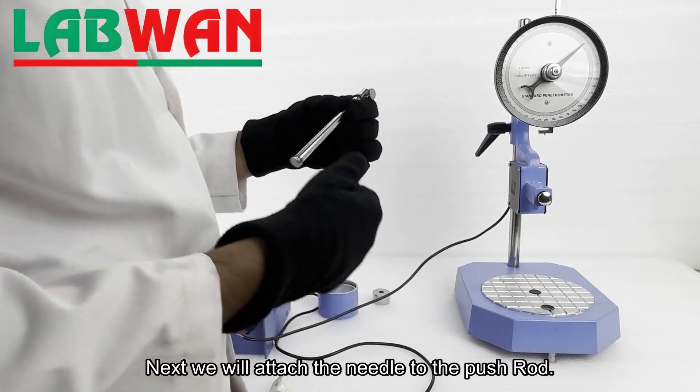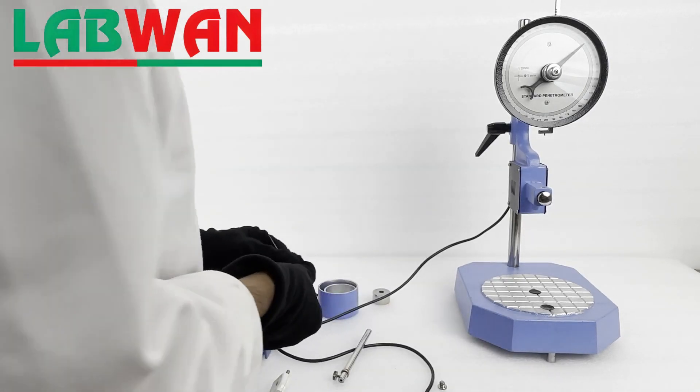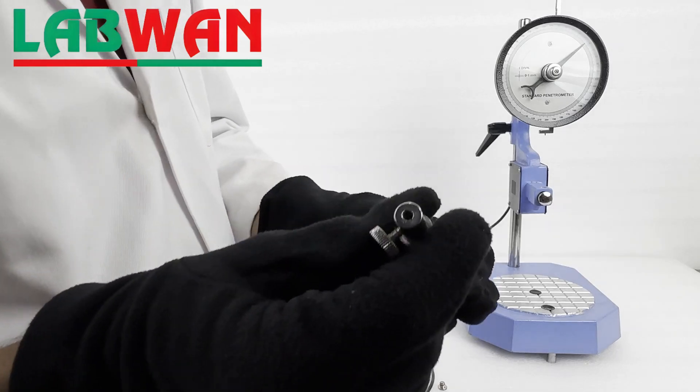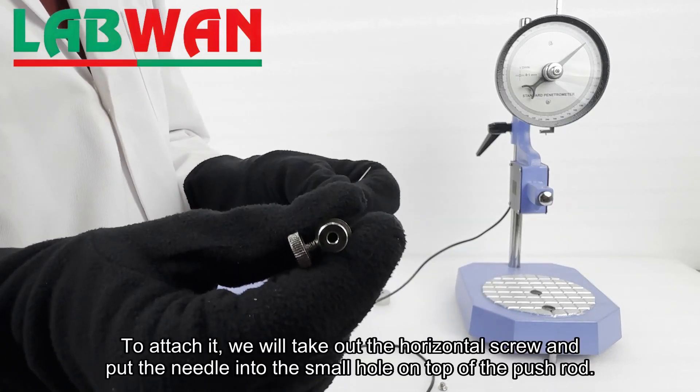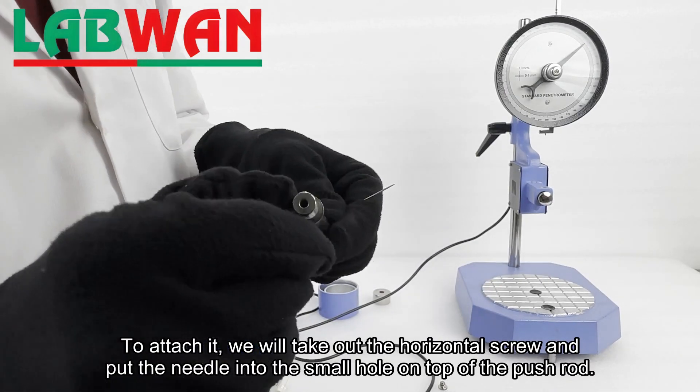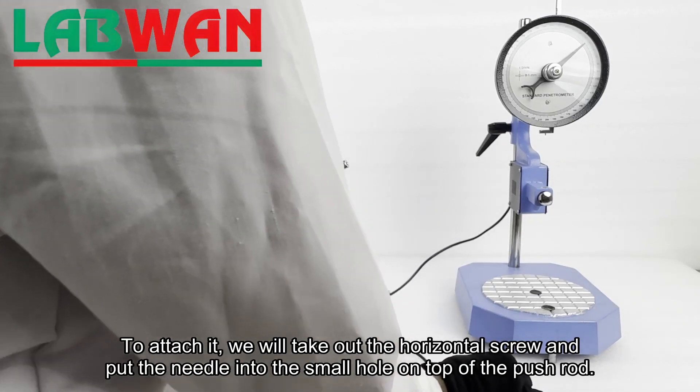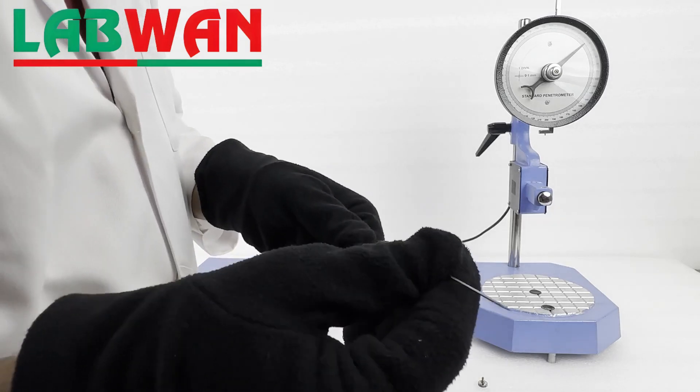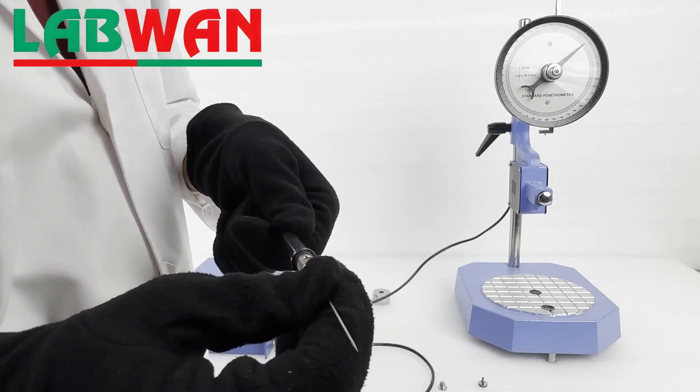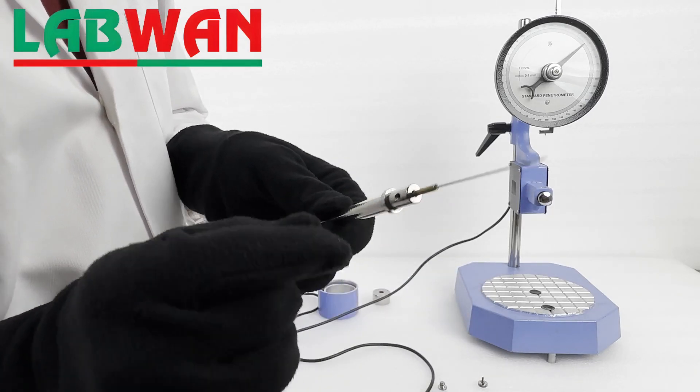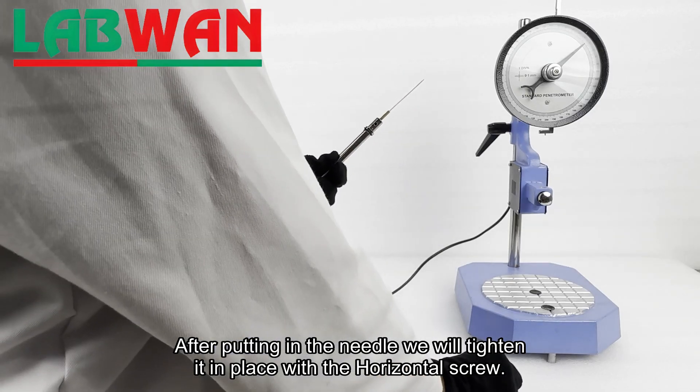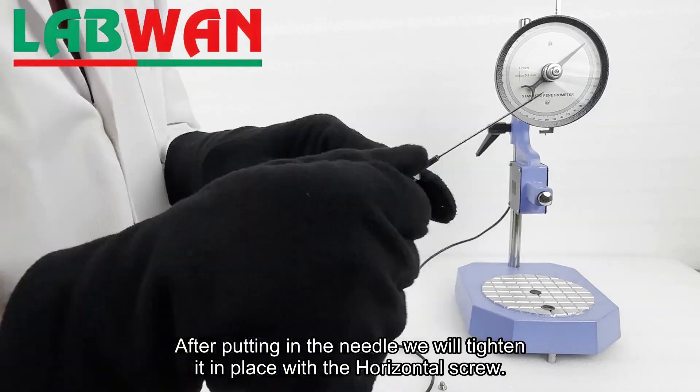Next, we will attach the needle to the push rod. To attach it, we will take out the horizontal screw and put the needle into the small hole on top of the push rod. After putting in the needle, we will tighten it in its place with the horizontal screw.